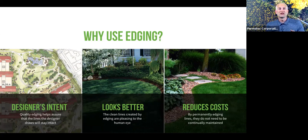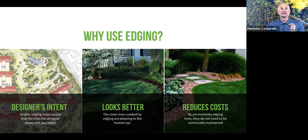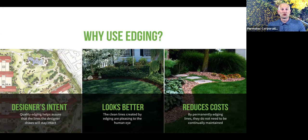Next, putting edging on the project just makes it look better. As the human eye looks across a landscape, clean lines and true separation of adjacent materials increases visual appeal. The level of visual aesthetics is increased with edging. Additionally, the project will continue to look its best when materials are contained — brick paver areas stay tight and clean, mulch is not swept away into areas it shouldn't be. Everything remains orderly and tight. It just looks better.